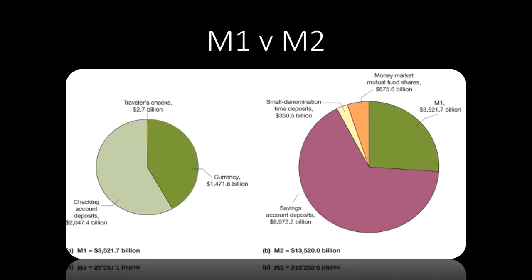Last but not least, I pulled the diagram from your textbook to show you the difference between M1 and M2. These numbers are a little lower than what was shown in the FRED graphs because these are static from your textbook. With M1, the majority is checking account deposits, then there's a decent amount of currency, and traveler's checks is a very small amount.